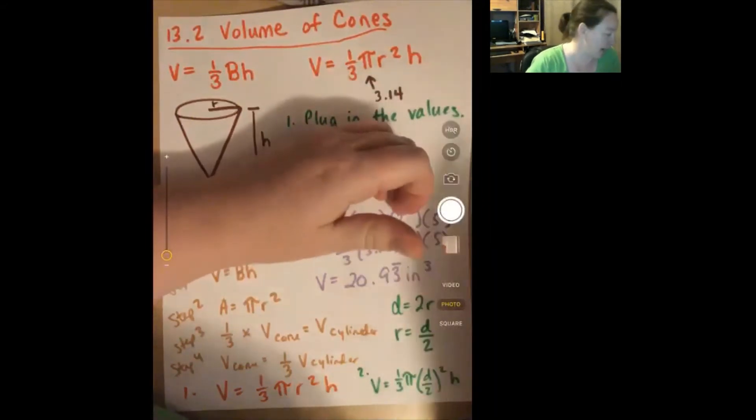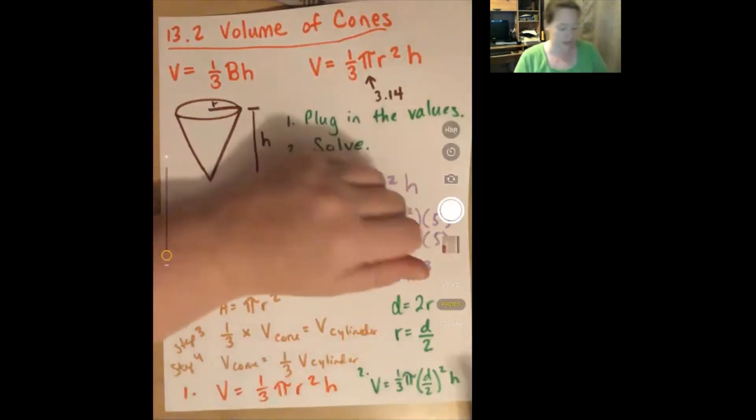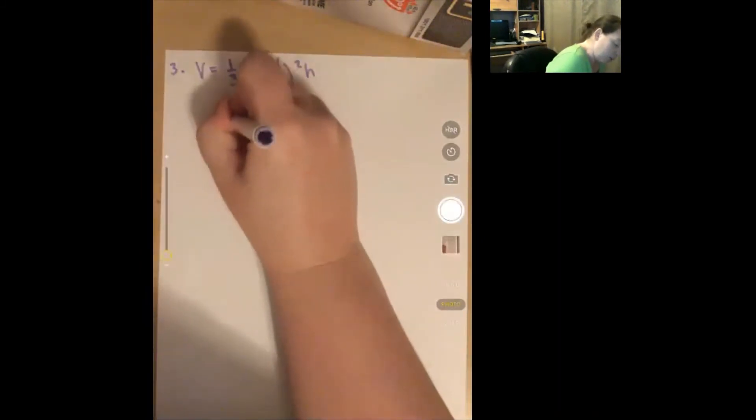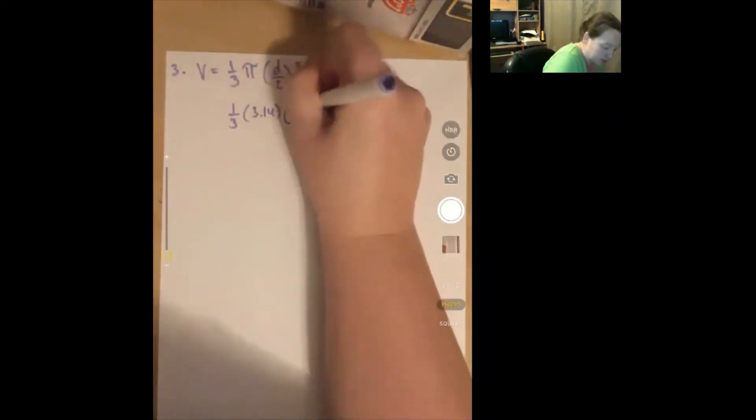Next page: find the volume of each cone, rounded to the nearest tenth. Number three: volume equals one-third pi times (d over 2) squared times h, since we're given a diameter, not a radius. One-third stays the same, pi becomes 3.14, d is 15 divided by 2, squared, and h is 16. 15 squared is 225 and 2 squared is 4.